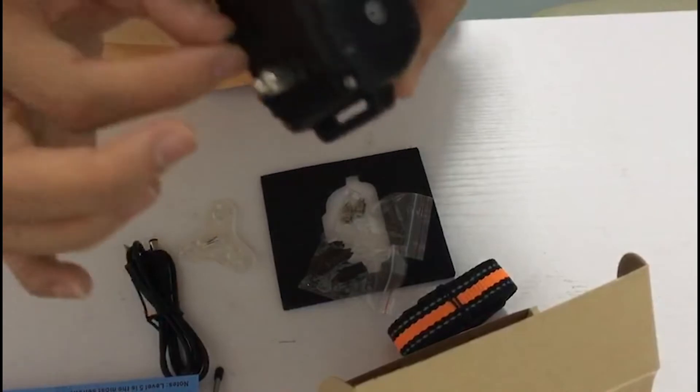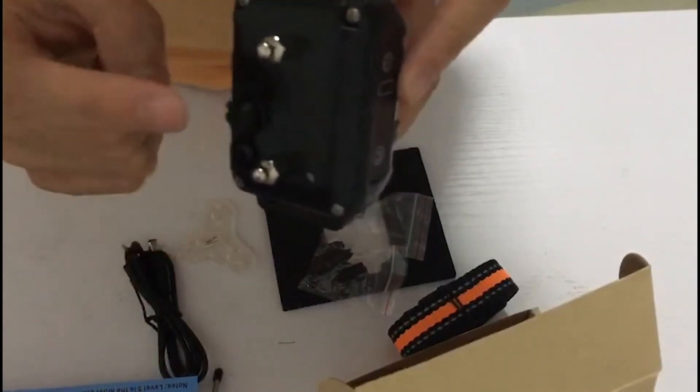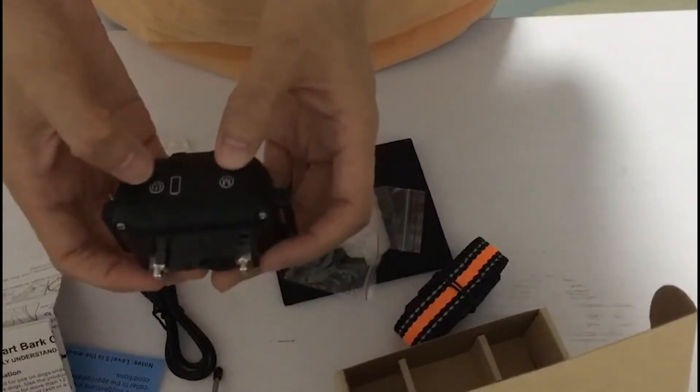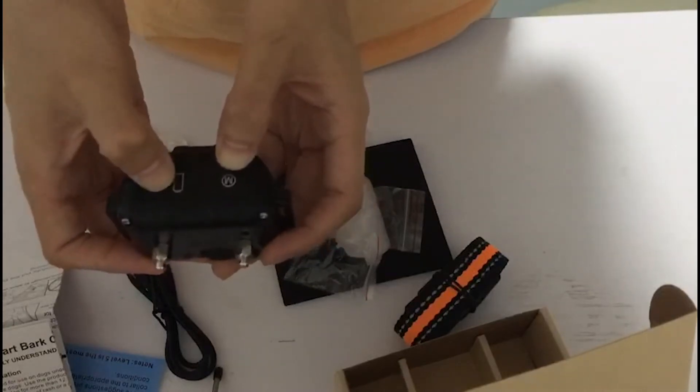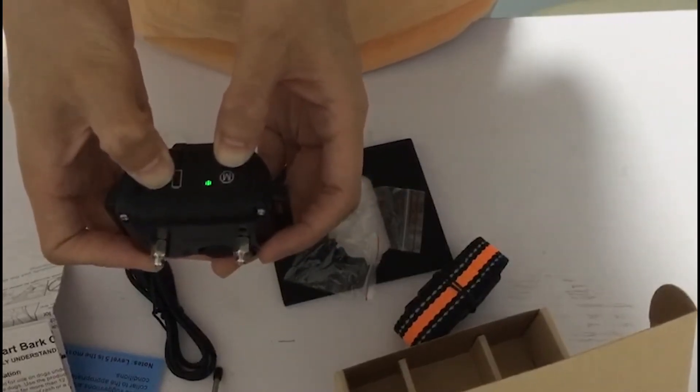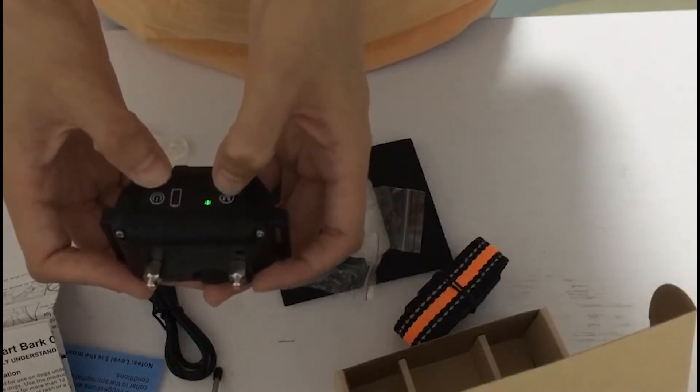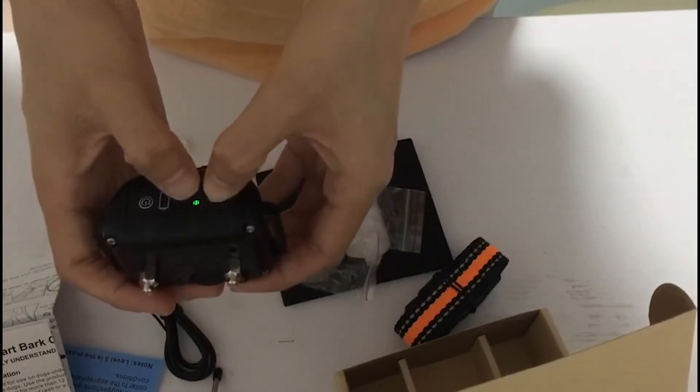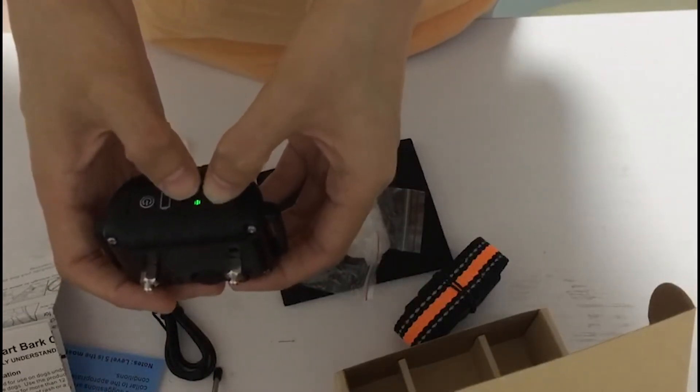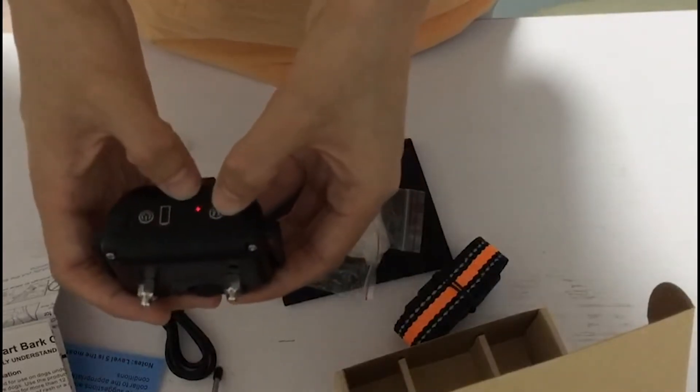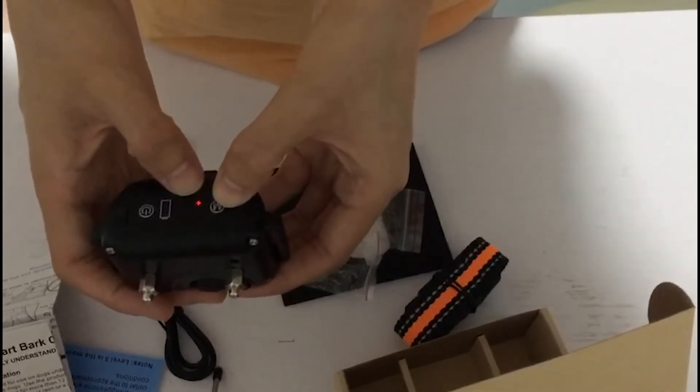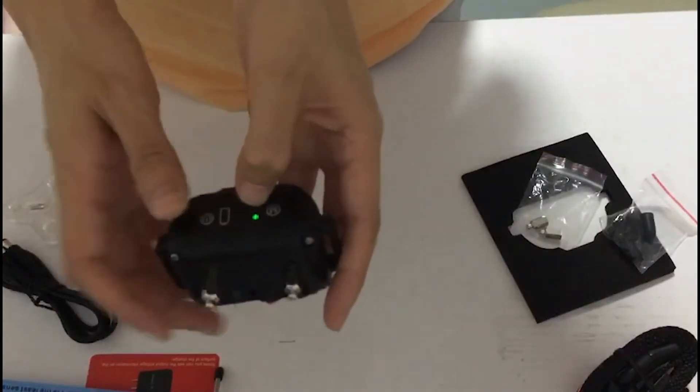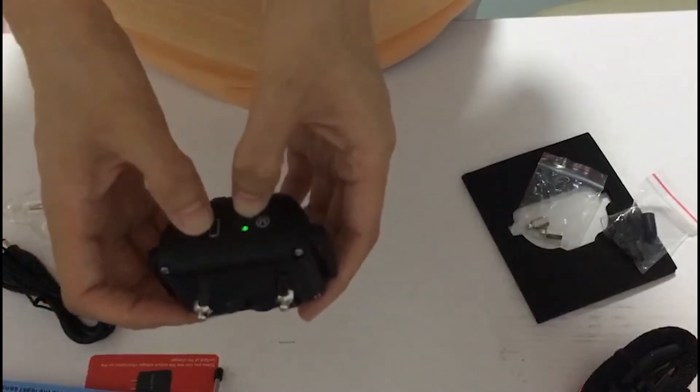The charge has overcurrent protection. Let's see the bark collar. This is the power button to open. This is the mode button. The green light is beep and vibrate, no shock. The right light is beep, vibrate, and shock. We can test. We should adjust the level to zero level.